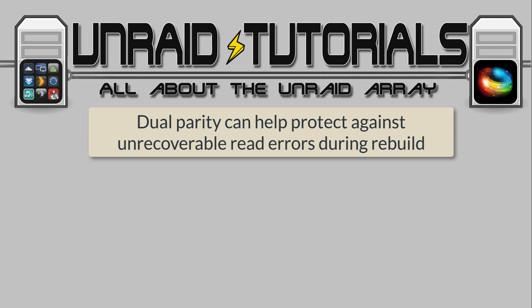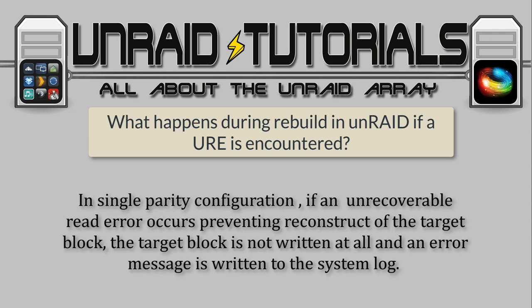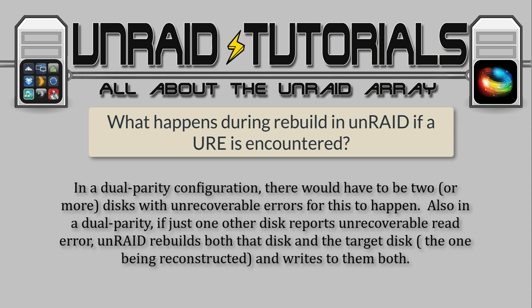So what happens in Unraid during a rebuild if this error happens? In single parity configuration, if an unrecoverable read error occurs preventing the reconstruct of the target block, the target block is not written to at all and an error message is written to the system log. This would result in a missing part of the data — a hole — so the file at that position would be damaged. In dual parity configuration, however, there would have to be two or more disks with unrecoverable errors for this to happen. Also, in dual parity, if just one other disk reports an unrecoverable read error, Unraid rebuilds both that disk and the target disk being reconstructed, and writes to them both. So dual parity helps you avoid data gaps in a rebuild should you experience a URE during the process.